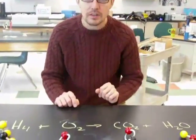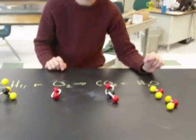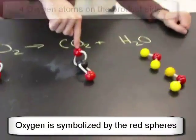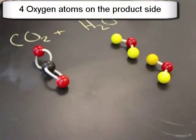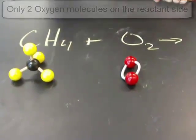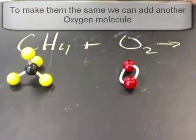But by changing the hydrogen here by adding the water, I've also changed the number of oxygen molecules. So let's look at our oxygen on this side. I have one, two, three, four oxygen molecules. Over on this side, I have one, two oxygen atoms.